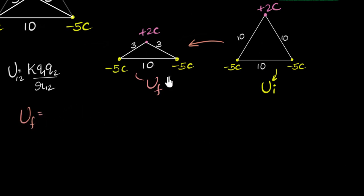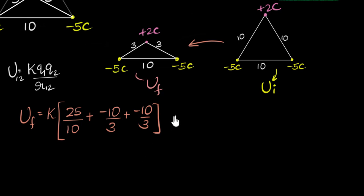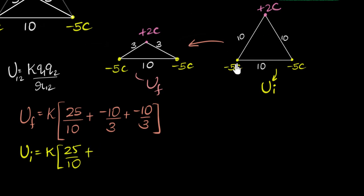Let's start with the final potential energy. That's going to be K in brackets — K will be common everywhere. First let's take these two charges: Q1 Q2 is minus five times minus five, that's 25, divided by the distance between them, that's 10. Plus, let's take these two charges: minus five times two is minus 10, divided by this distance of three. Plus, these two charges give the same answer: minus 10 over three. Now the initial potential energy — taking these two charges first gives 25 by 10. Plus, these two give minus 10 divided by 10. And again, minus 10 divided by 10 for the last pair.